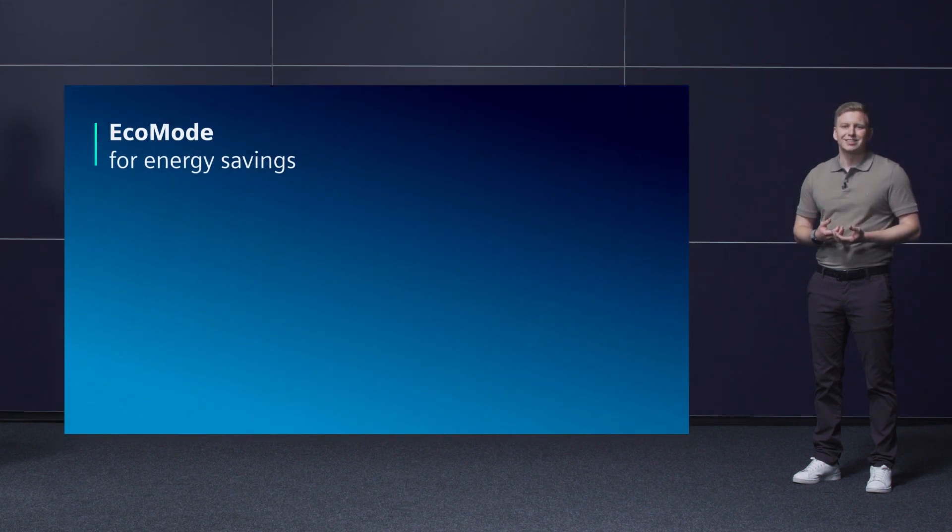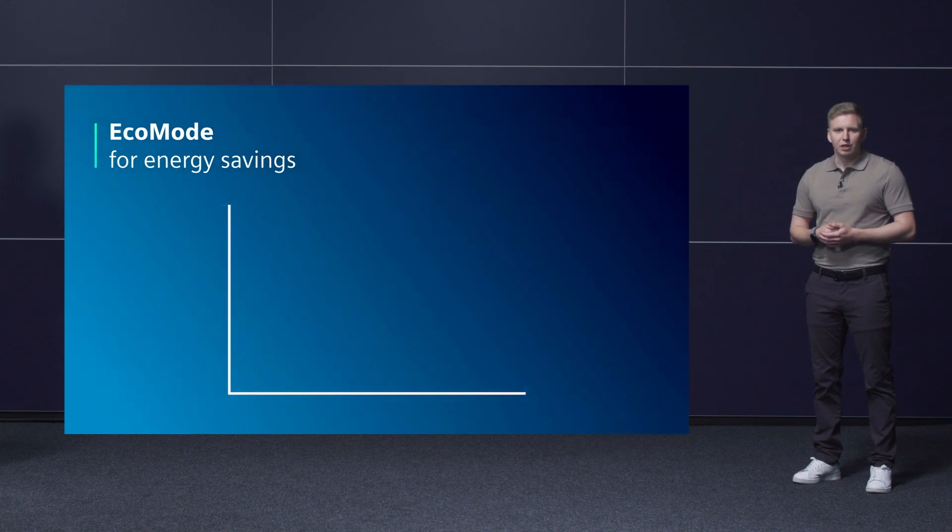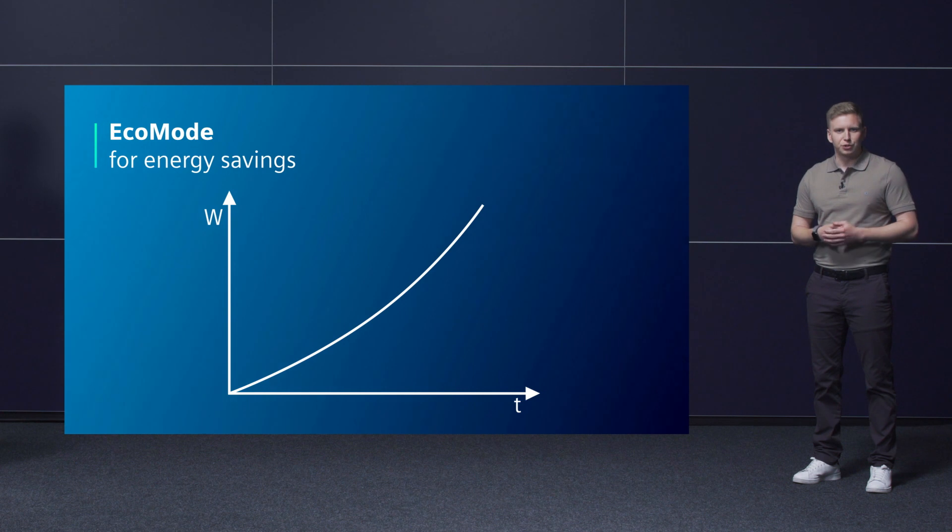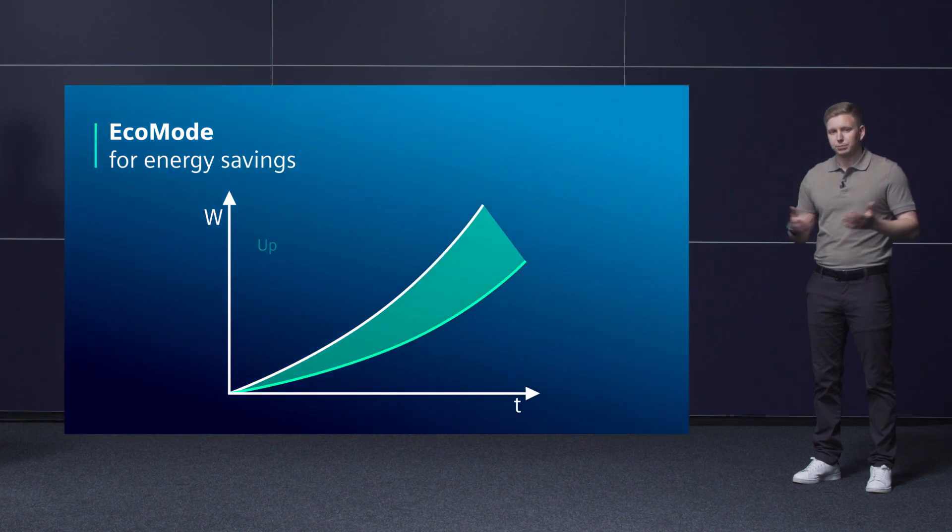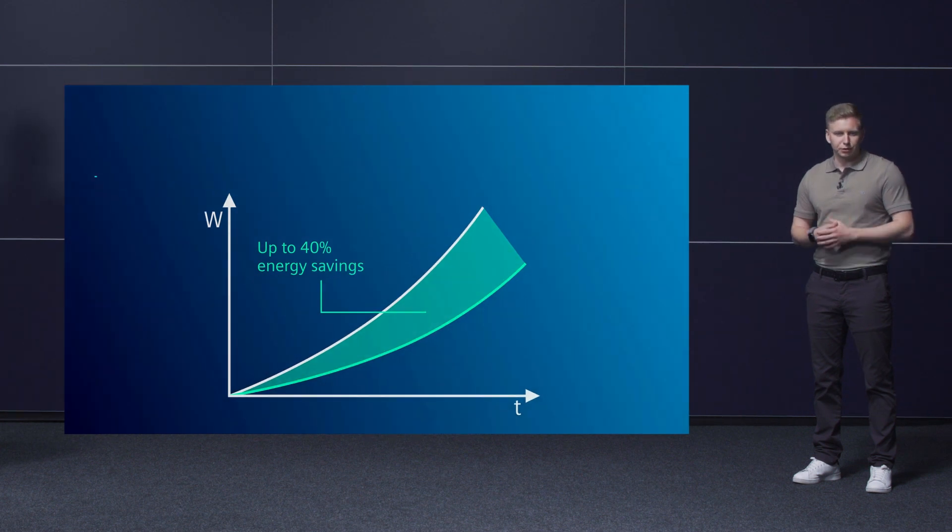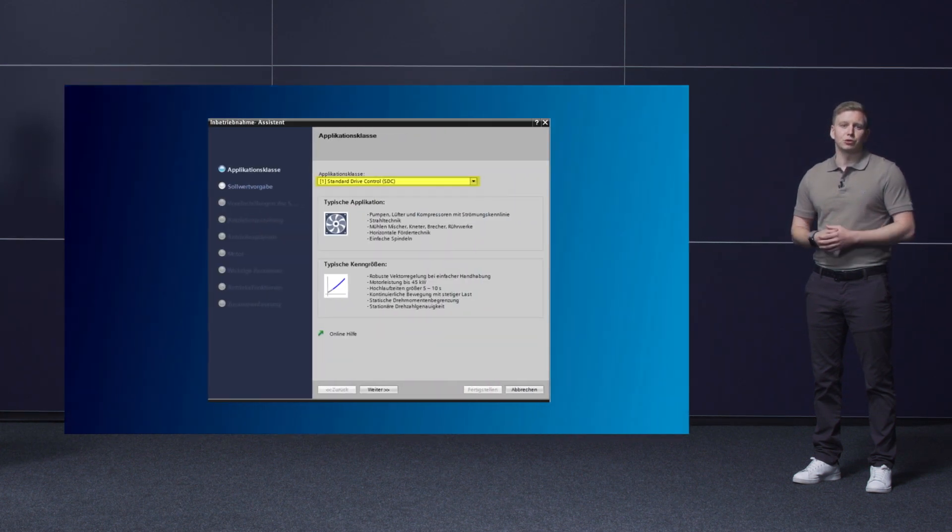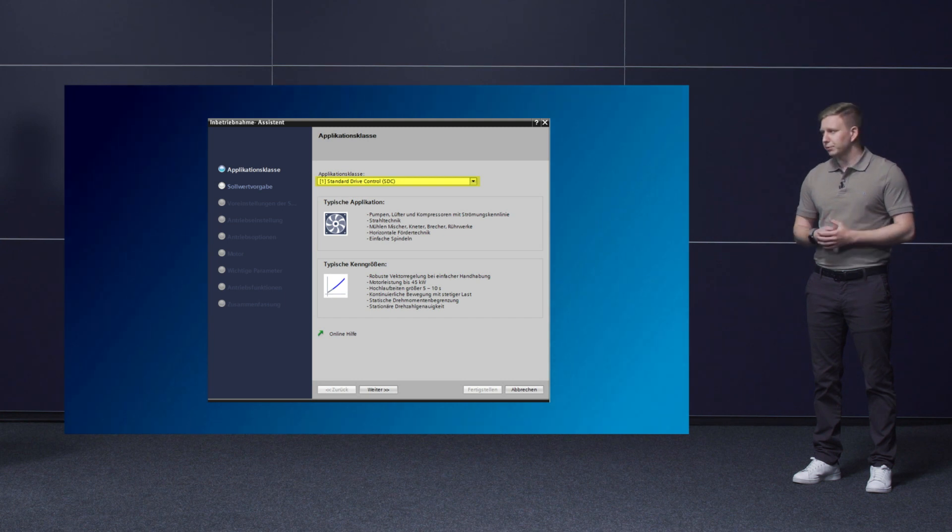The Eco mode function enables you to save a lot of energy. For example, if a fan is operated constantly at one speed, this function lowers the output voltage to optimize efficiency. This can mean energy savings of up to 40%. These and other functions are included in the standard drive control and can be easily parameterized.